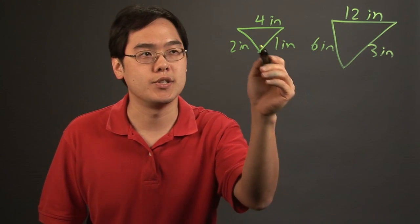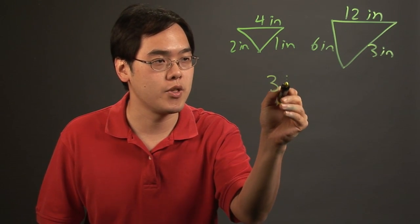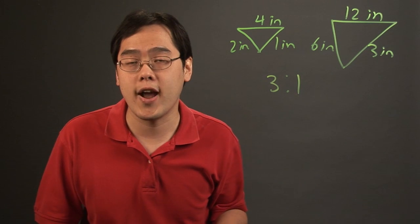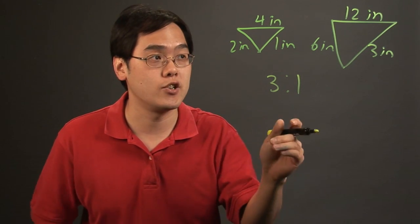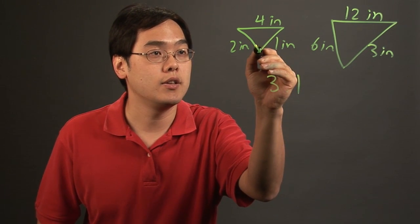So the scale factor is going to be 3 to 1. Now what happens with a scale factor is if you can find a scale factor, then you can make the argument that the corresponding angles are going to be congruent.